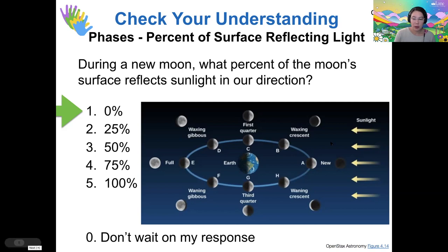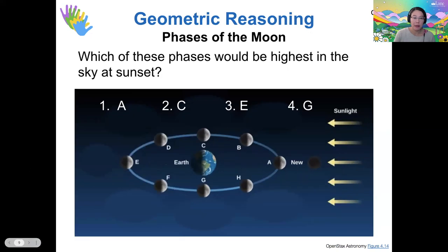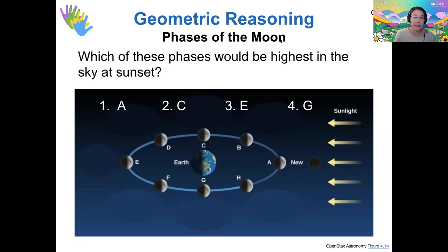That's the new moon, but we get all these other phases at different times of the month because our position as an observer on Earth is oriented a little bit differently. When we see these moons highest in the sky, the different phases depend on where we are on the planet compared to what we call the terminator line — the line between lightness and darkness. For the Earth observer looking at the new moon it would be midday, so the question is: which phase would be highest in the sky at sunset?